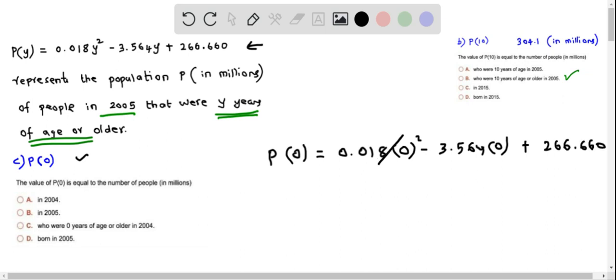We know that 0 times any number is 0 and this will get cancelled. So finally we get p of 0 equals 266.660 and this is in millions. So we mark this as 266.660 million.